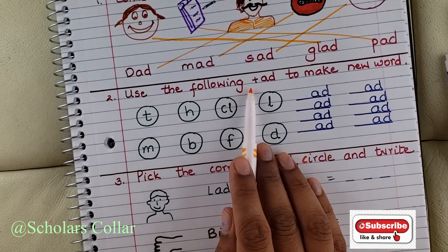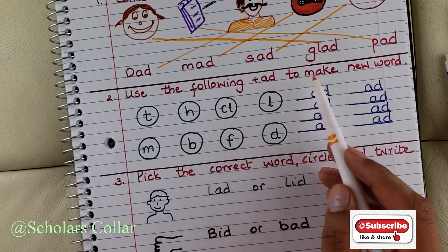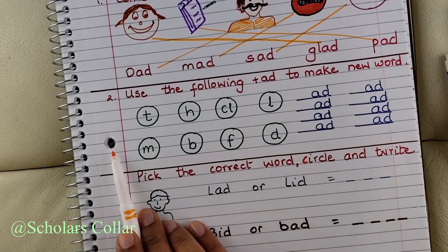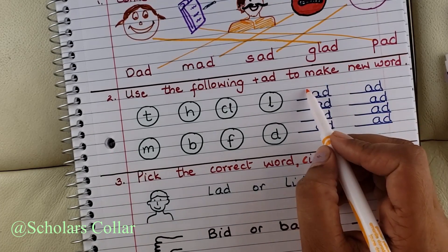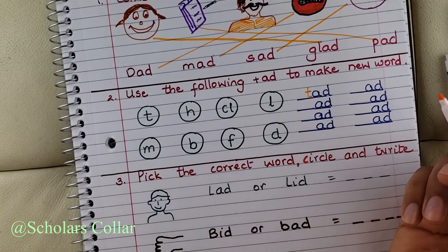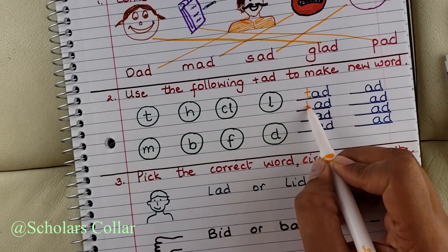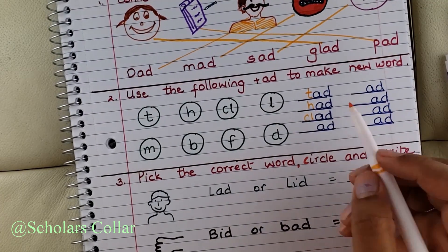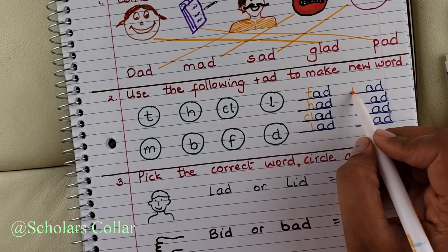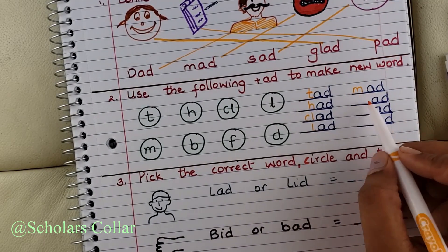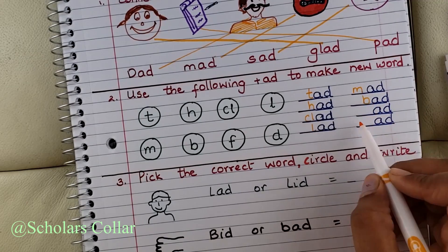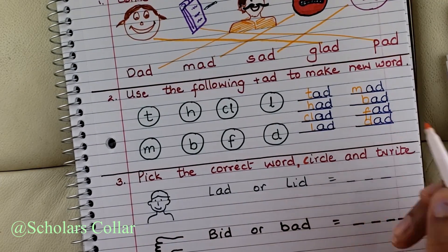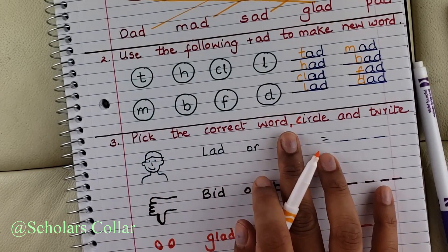Next we are going to use 'ad' to make new words by adding a letter. T-ad, tad. H-ad, had. Cl-ad, clad. L-ad, lad. M-ad, mad. B-ad, bad. F-ad, fad. And D-ad, dad.